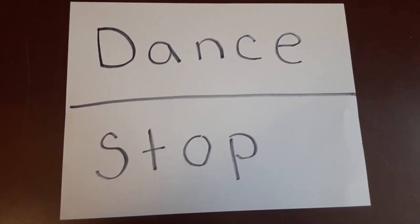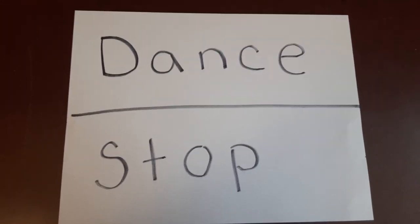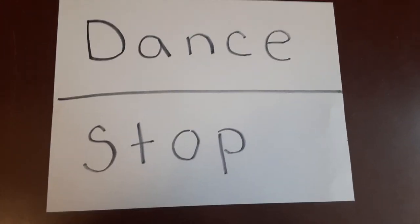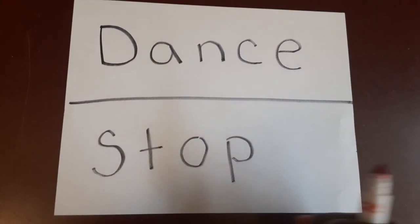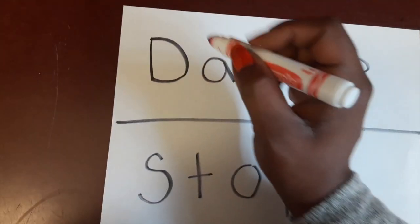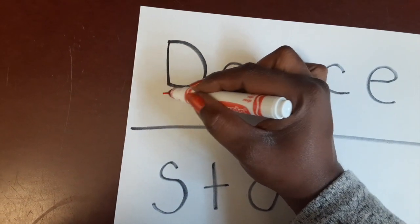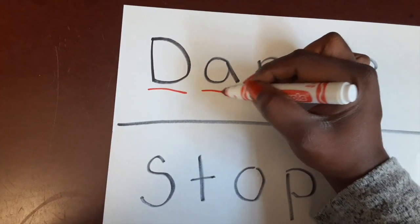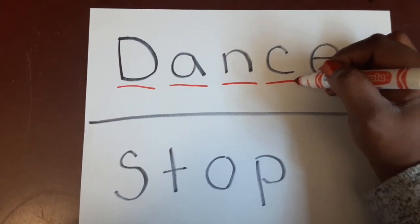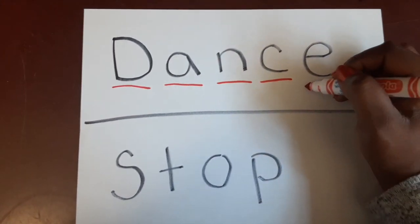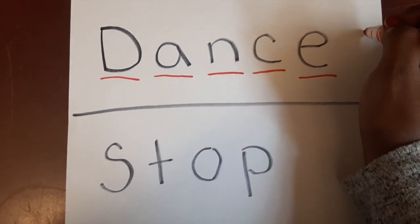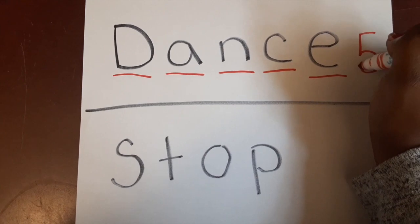Take a guess. Now we are going to count the letters and see which one has more letters. I'm going to start with the word at the top — dance. Can you count with me? One, two, three, four, five. The word 'dance' has how many letters? Five.